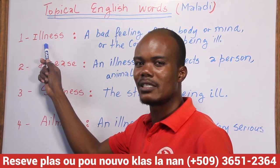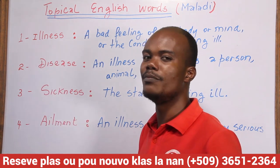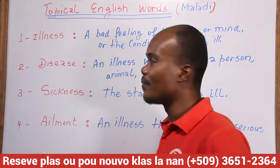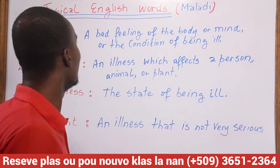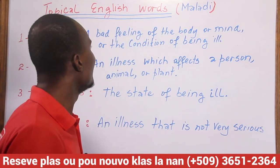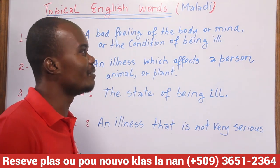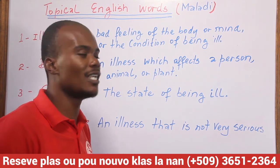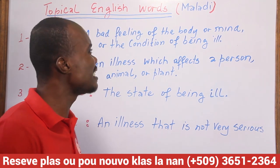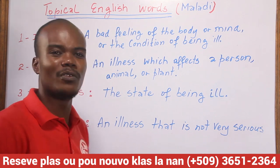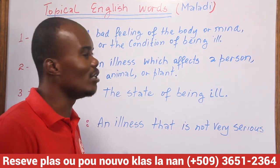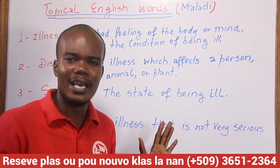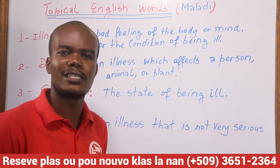Illness. Illness. That's great. You hear the sounds and you practice saying it. So, illness — what is an illness? An illness is a bad feeling of the body or mind, or the condition of being ill. An illness is when a person doesn't feel well, physically or mentally. This is what they call an illness.